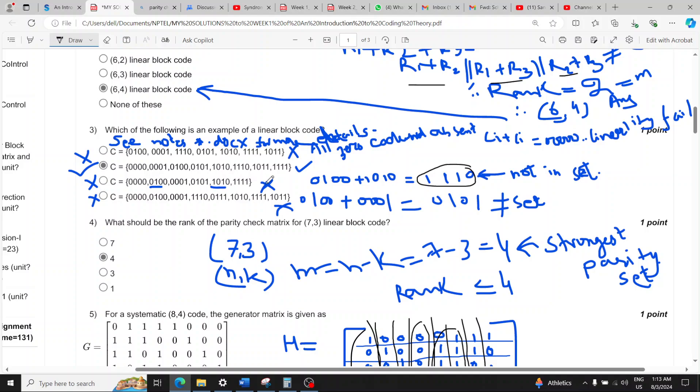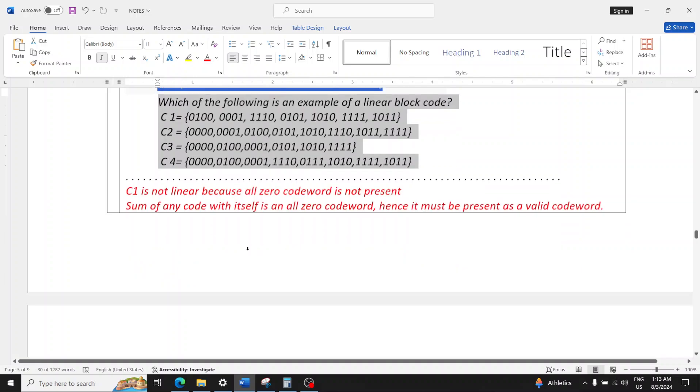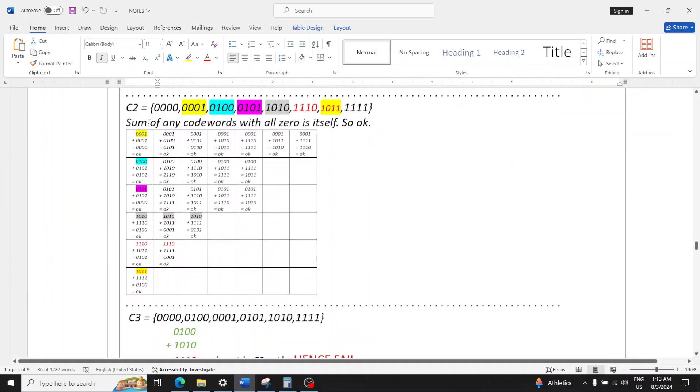If we add these two you get this one, but this code word is not present in this set. One one zero is not there. Similarly in this set if we add zero one zero and zero zero one, this gives zero one zero one which is again not present in this set, so linearity is violated.